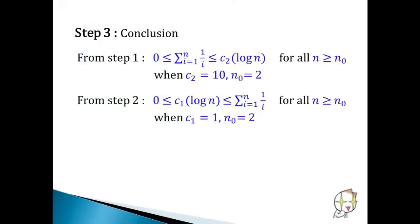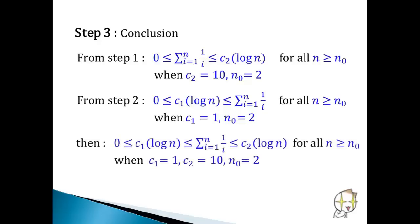From step 1, we show the upper bound. From step 2, we show the lower bound. Then combine the upper bound and lower bound to tight bound with c1 equals 1, c2 equals 10, and n0 equals 2. By the definition of big theta, we can conclude that the sum of the first n terms of harmonic series is big theta log n.